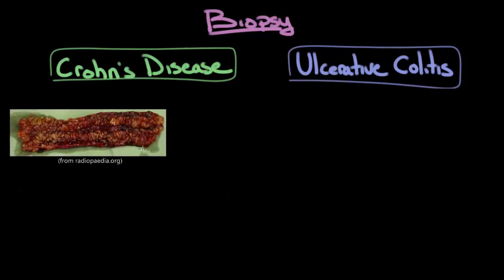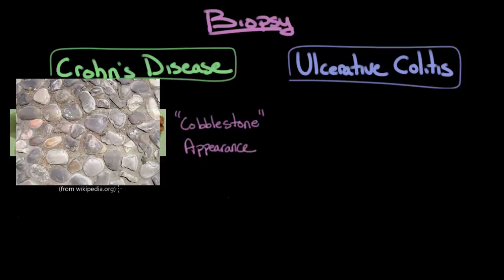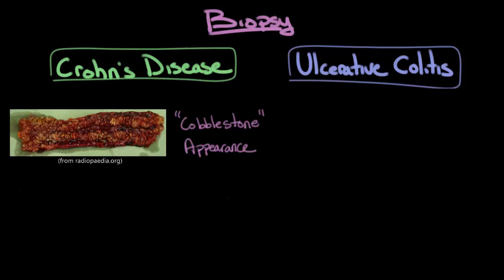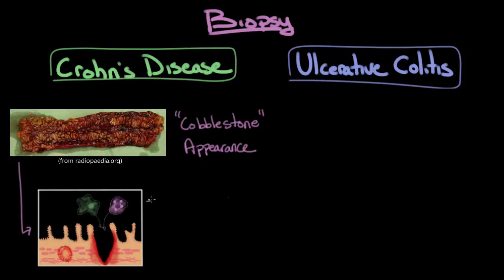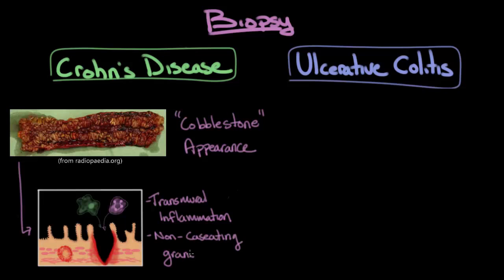In Crohn's disease, on visualization the lesions grossly look like what's known as a cobblestone appearance — the intestinal wall has numerous intersecting lesions making this cobblestone pattern. Once this gross appearance is seen, a biopsy of the intestinal wall is taken to look at under the microscope. The characteristic microscopic findings of Crohn's disease are transmural inflammation — where the inflammation goes through all three layers of the intestinal wall: the mucosa, the submucosa, and the muscularis externa — as well as non-caseating granulomas, which are a sign of chronic infection.